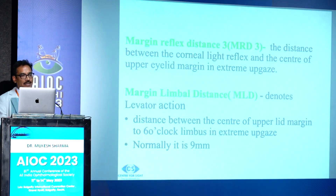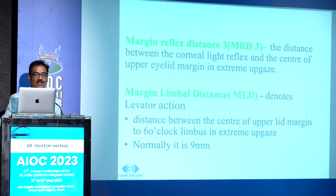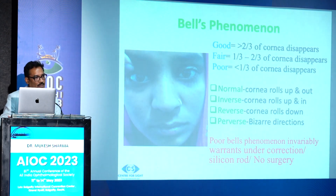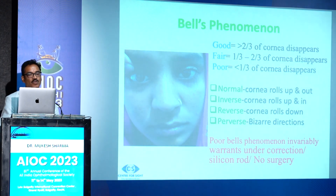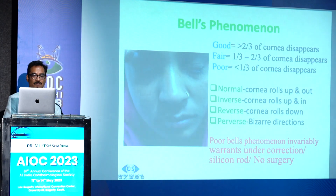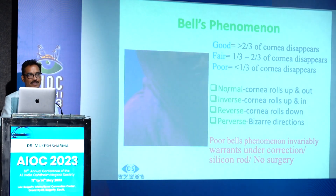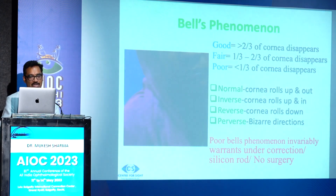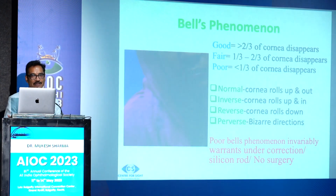Bell's phenomenon: label as good when more than two-thirds of the cornea disappears on attempted eyelid closure, fair if one-third to two-thirds disappears, and poor if less than one-third disappears. Other varieties include normal, inverse, reverse, or perverse Bell's. A poor Bell's phenomenon invariably warrants either no surgery or under-correction with a silicone rod — you do not want significant lagophthalmos in these cases as it leads to exposed cornea postoperatively.